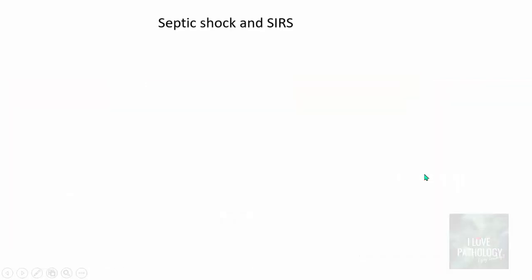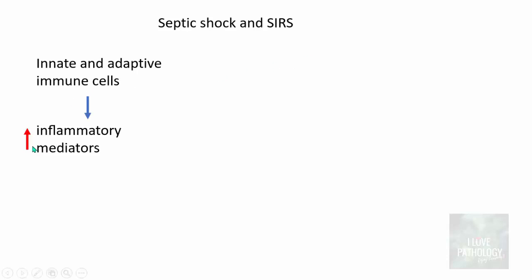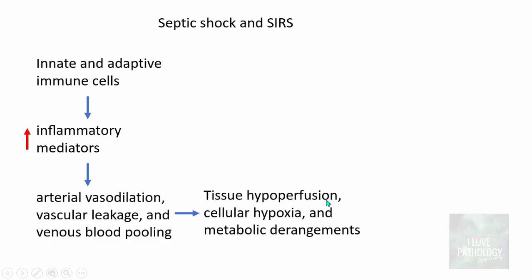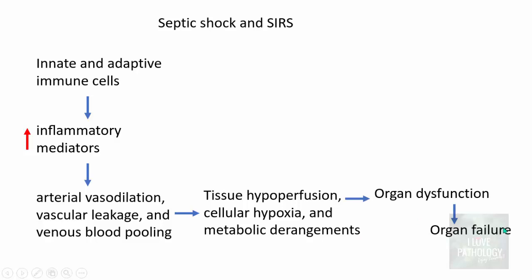In sepsis, septic shock, and SIRS, the innate and adaptive immune cells are activated, which releases lots of inflammatory mediators causing arterial vasodilatation, vascular leakage, and venous blood pooling. The effects of all these result in tissue hypoperfusion, which leads to cellular hypoxia and various metabolic abnormalities, resulting in organ dysfunction and ultimately organ failure, which might lead to death.